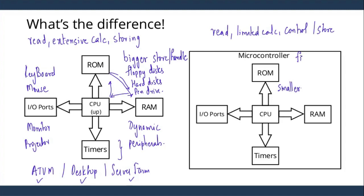I will take an example of a microwave oven. If you look at a microwave oven, the program that is there — what do we use a microwave oven for? To cook food. The algorithm or the instructions for the microwave oven does not change over time or its lifetime, so the program remains fixed. The set of instructions always remains fixed. So the RAM and ROM requirement is comparatively smaller with respect to a microprocessor. Here the programs are more static instead of dynamic.